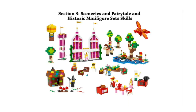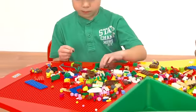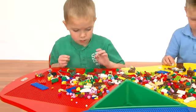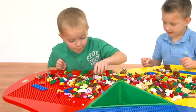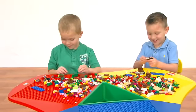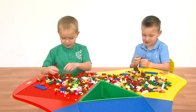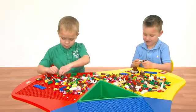Section 3: Materials — Sceneries and Fairytale and Historic Minifigure Sets. In this section, you will learn ways to use the Sceneries and Fairytale and Historic Minifigure Sets. There are many literacy skills that can be strengthened by using these two sets.